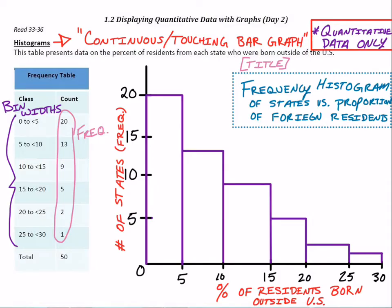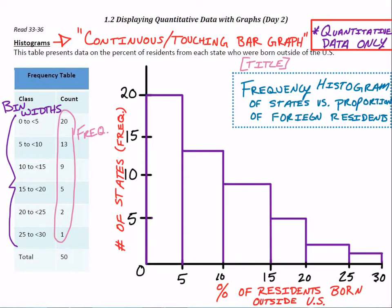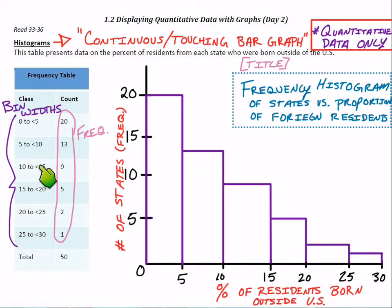An interesting question: what state is the one between 25% and 30% of its residents being born outside the U.S.? Also, let's say Illinois has exactly 10% of foreign-born residents — which bin would it go in? We have to be careful: this bin had 5 to less than 10, and the next one has 10 to 15. So the 10 is actually included in the 10-to-15 bin.